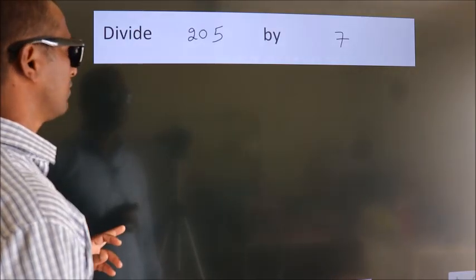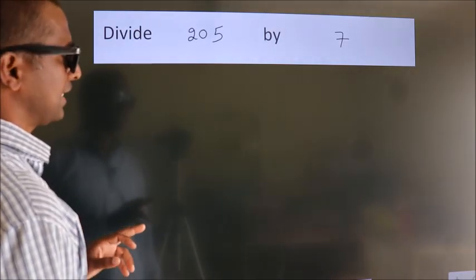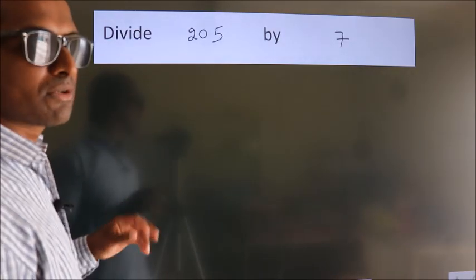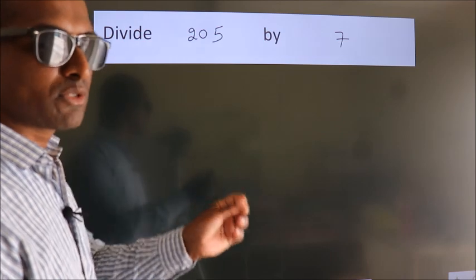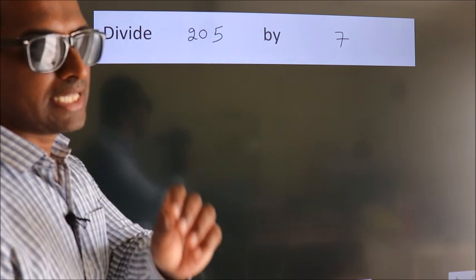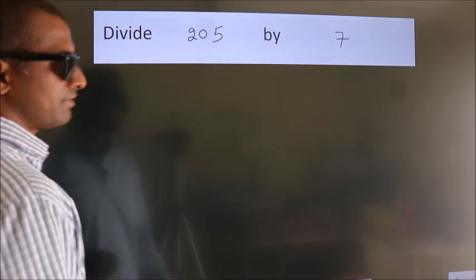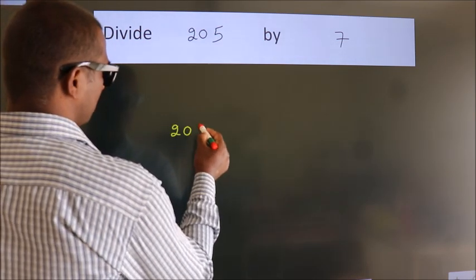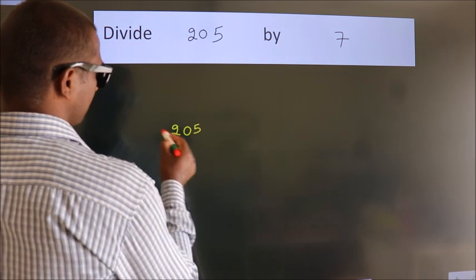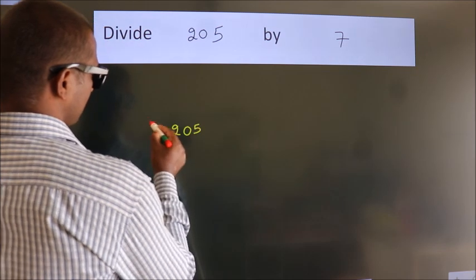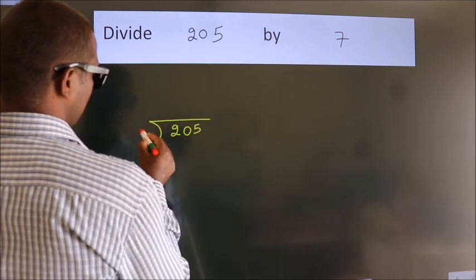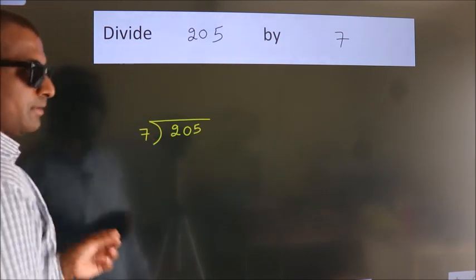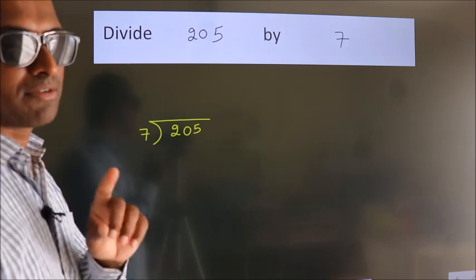Divide 205 by 7. To do this division, we should frame it in this way: 205 here, 7 here. This is your step 1.